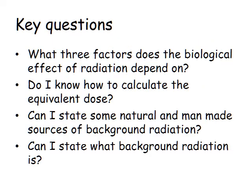To summarise, you should know the three factors that the biological effect of radiation depends upon: the absorbed dose, the type of radiation, and the type of tissue exposed. You should know how to calculate the equivalent dose, and you should be able to state natural and man-made sources of background radiation and explain what background radiation is.